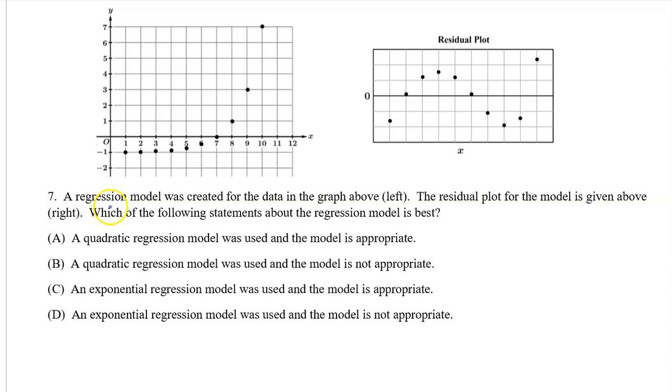Number 7. A regression model was created for the data in the graph upper left. The residual plot for the model is given above. Which of the following statements about the regression model is best? Before I even look at the answers, I see that the residual plot shows a pattern. And if the residual plot shows a pattern, it means the model was not appropriate. These two choices say the model is appropriate, so we know that the answer is not A or C. Both B and D say that the model is not appropriate. So how do we know which one is the right answer?